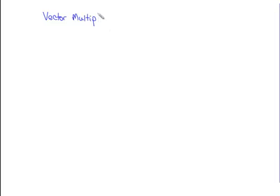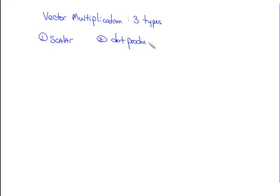Next, let's briefly talk about vector multiplication. We've covered adding and subtracting. There's also scalar multiplication — which we'll cover right now — the dot product, which we'll discuss in the next lesson, and the cross product, which isn't in this book but comes up extensively in physics. For now, we'll focus only on scalar multiplication.